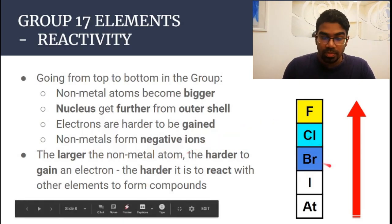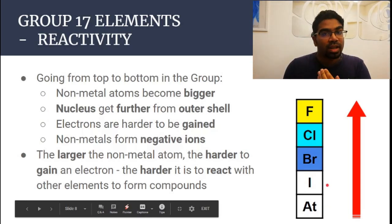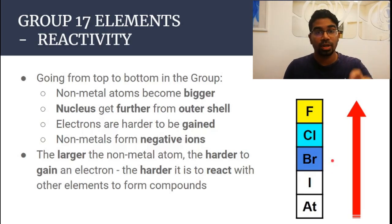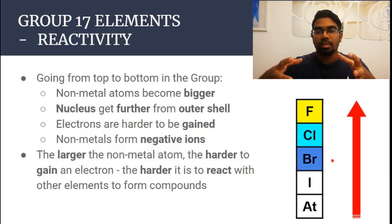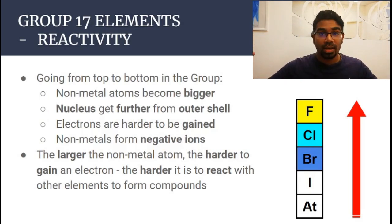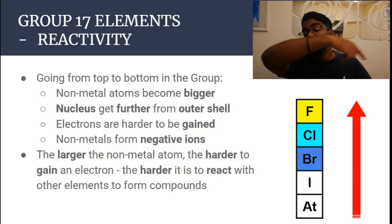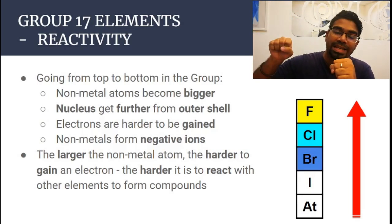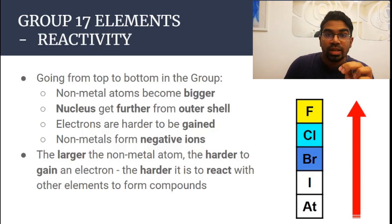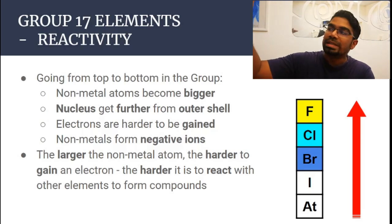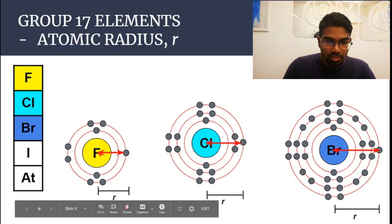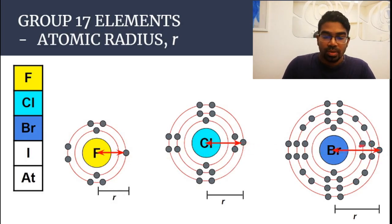As we go down the group, the number of shells increases, atom size becomes bigger and bigger, the valence shell becomes further from the positive nucleus, and so it becomes harder and harder to gain electrons. Therefore, the electronegativity — the ability to gain electrons — will decrease as we go down the group.